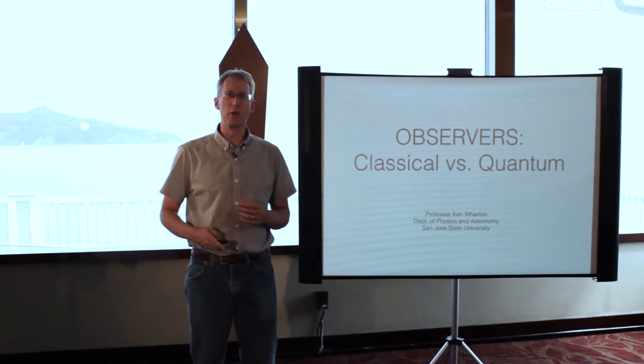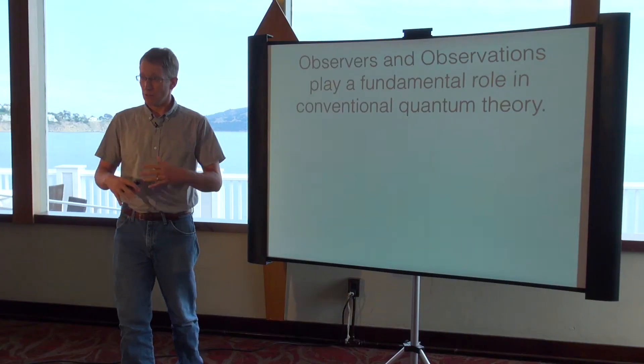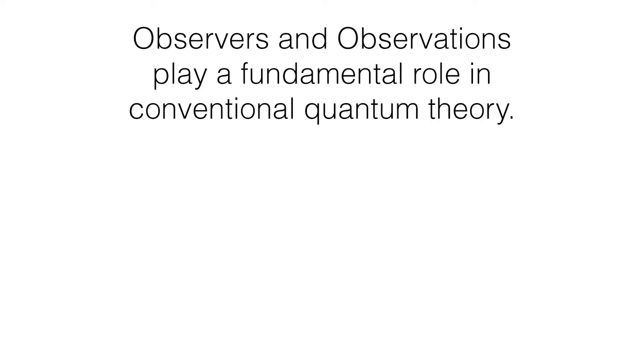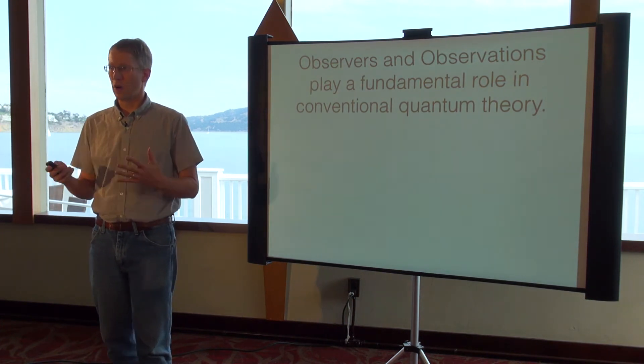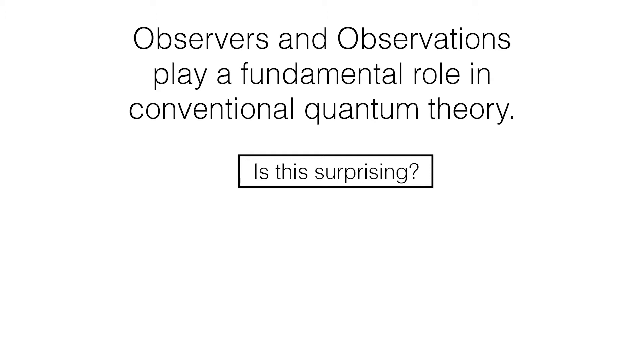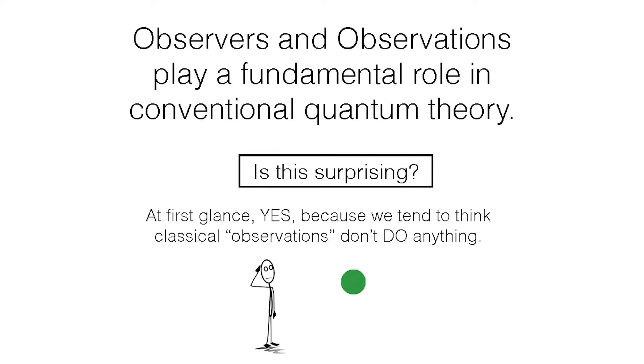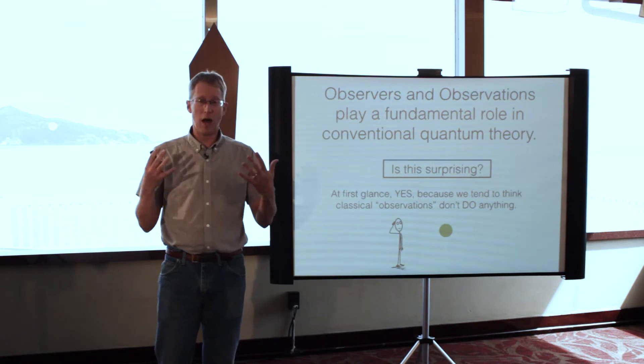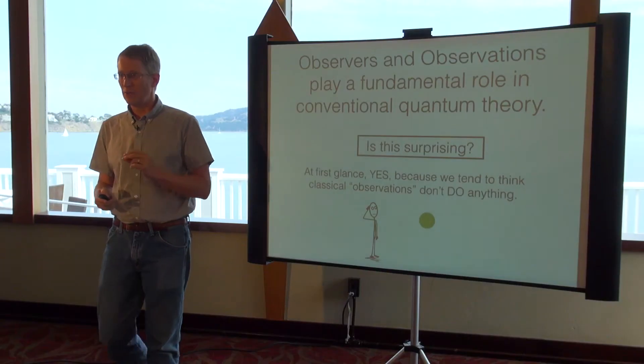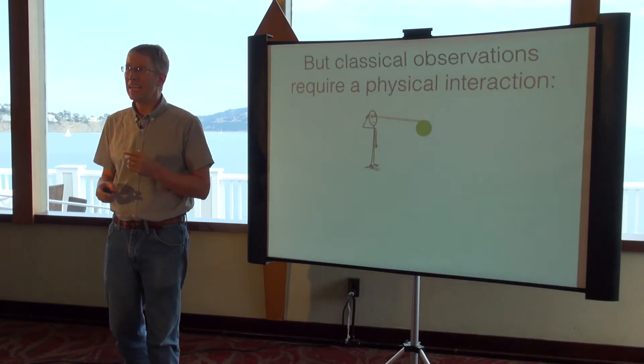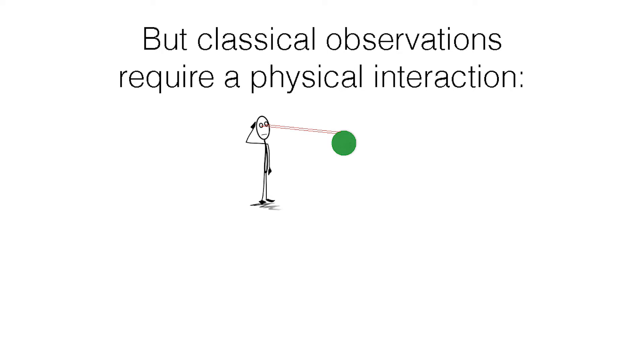The first weird thing is that observers matter at all in quantum theory. You don't really see this in classical theory, where an observer is kind of a key part of the quantum formalism. At least in conventional quantum theory. Is that surprising? It seems surprising because when we think of observers, we think we're just looking at something. Our observations aren't doing anything, so we shouldn't expect an observation to enter into the physics.